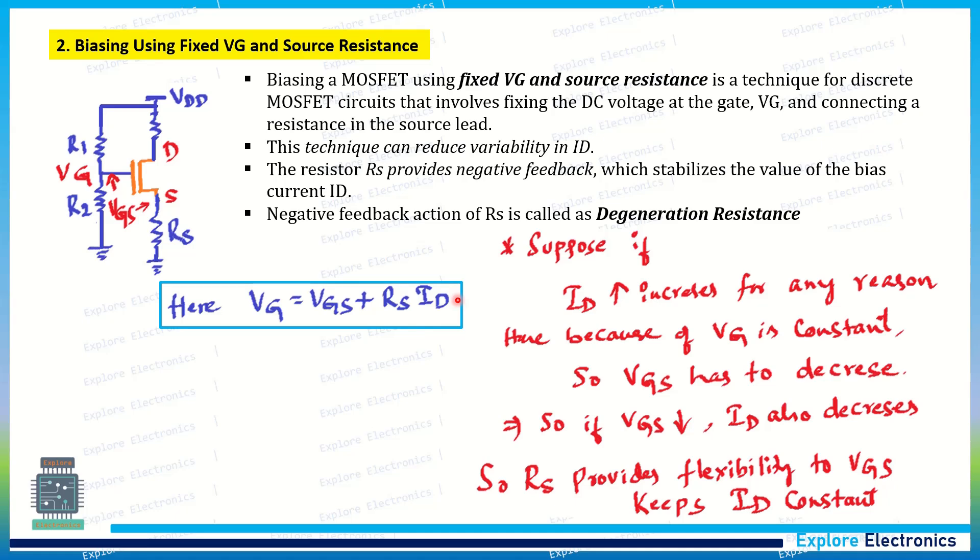The overall idea of this biasing method is that by putting RS, it will act as a feedback resistor. It gives the negative feedback and it will be called as a degeneration resistance. Because if ID increases because of any reason, it will bring back the ID to the normal position by allowing VGS to increase or decrease. Here VGS is not fixed. VGS can be varied because of ID increase or decrease because of the physical parameter variation. This VGS also varies. That makes the flexibility in bringing back the ID to a constant value, making the amplifier more stable.